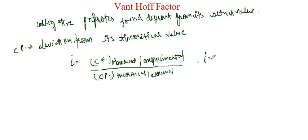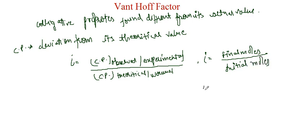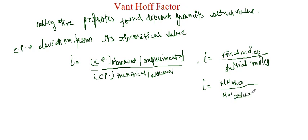i is also defined as final moles divided by initial moles. Equivalently, i equals molecular weight theoretical divided by molecular weight actual or observed. This is because colligative property is inversely proportional to molecular weight.